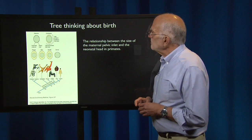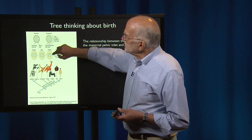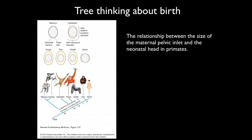Knowing the phylogenetic context of a disease can give us comparative insight into its origin and causes. For example, let's do tree thinking about birth. The picture shows diagrams of birth canals of macaques, gibbons, orangutans, chimpanzees, gorillas, and humans. The head of the infant being born in a macaque completely fills the birth canal, and so does the head of a human infant, whereas birth appears much easier in orangutans, chimpanzees, and gorillas.